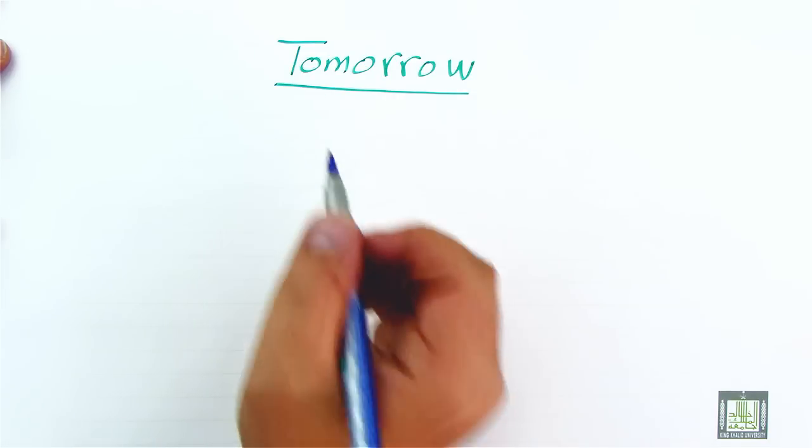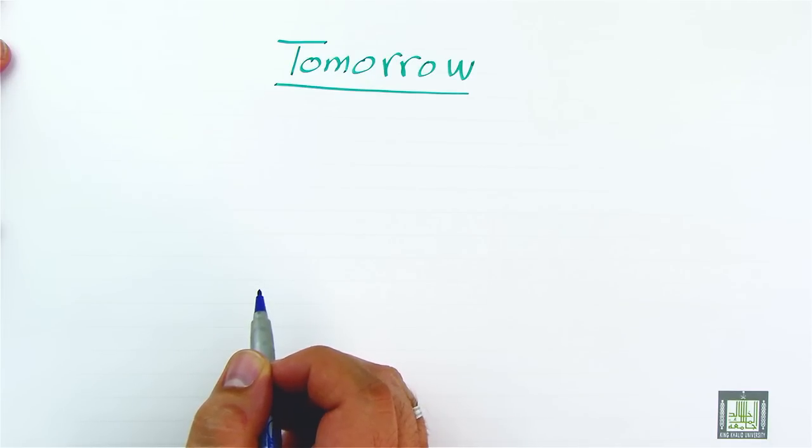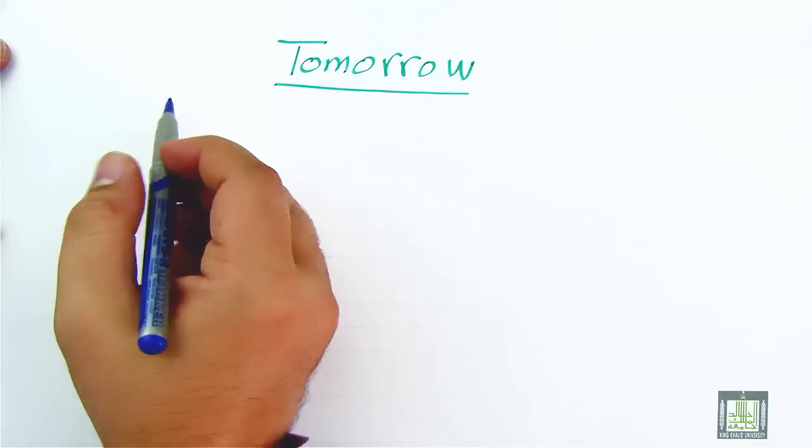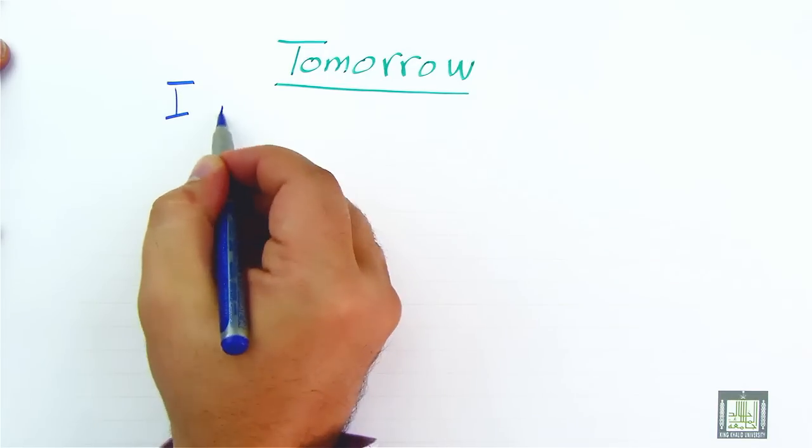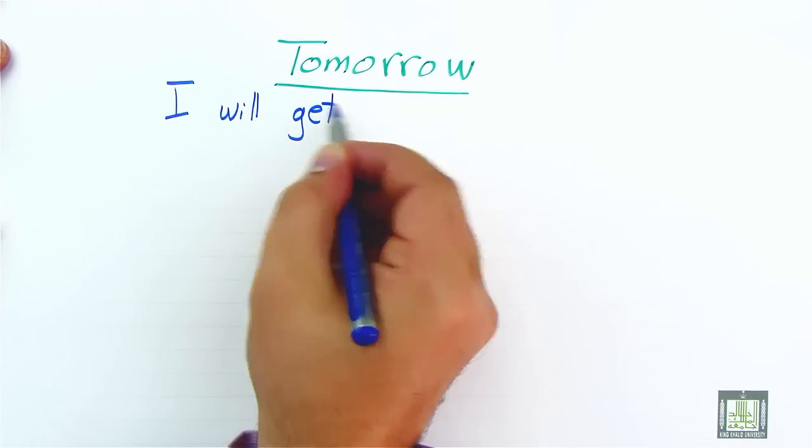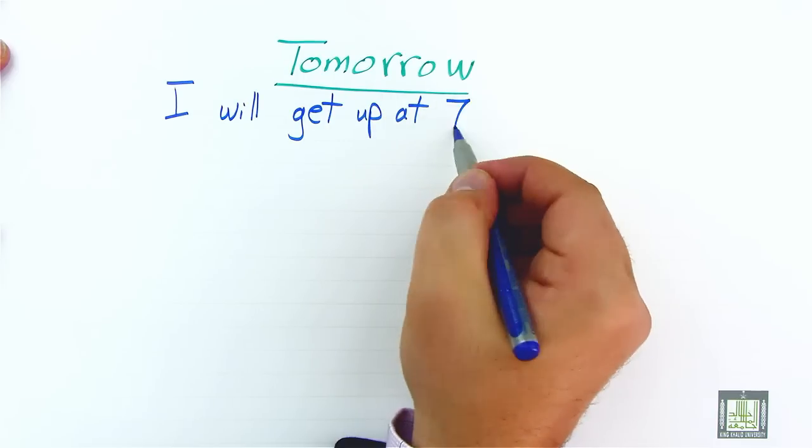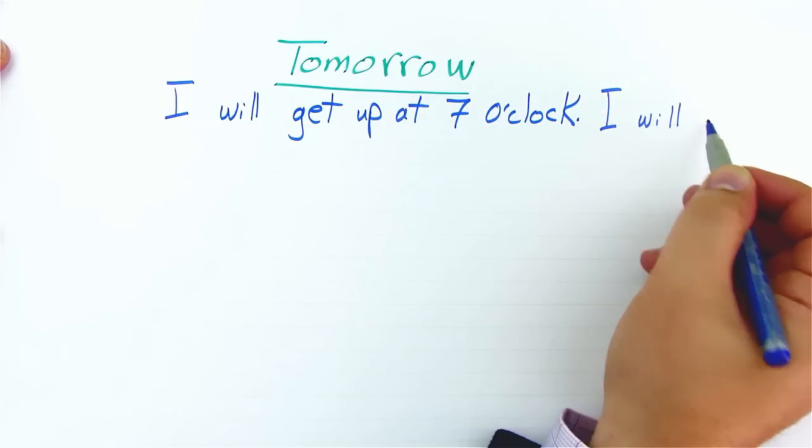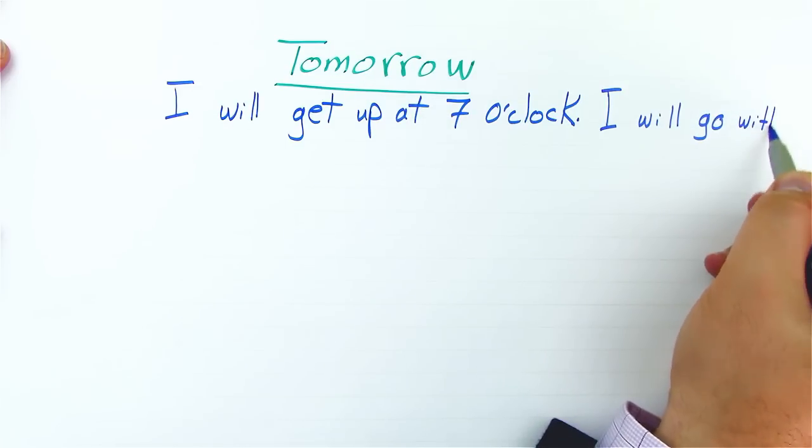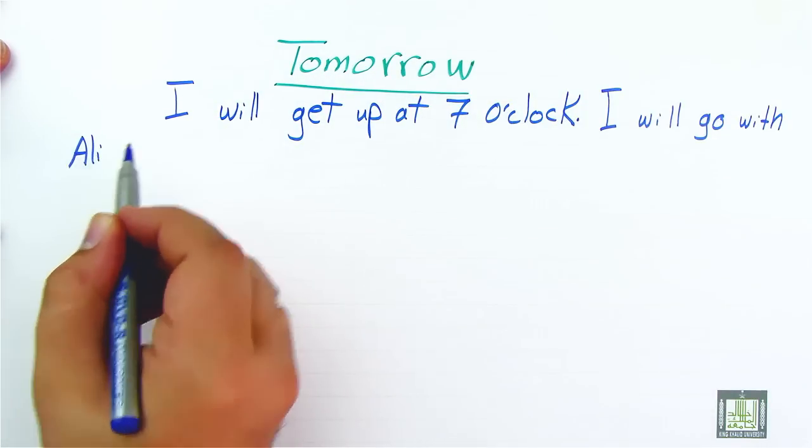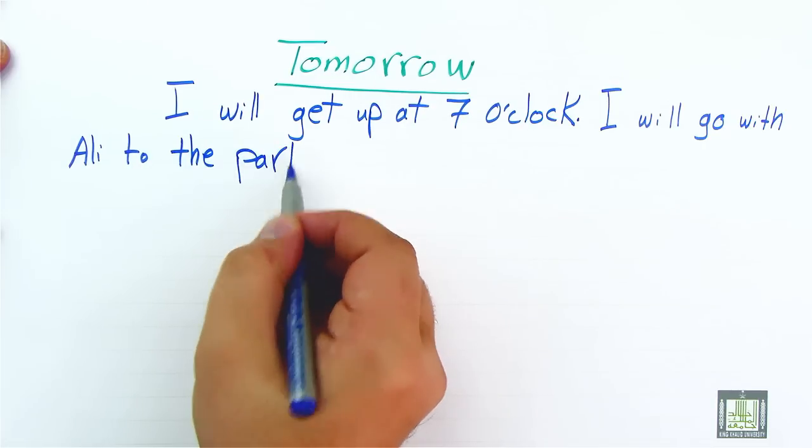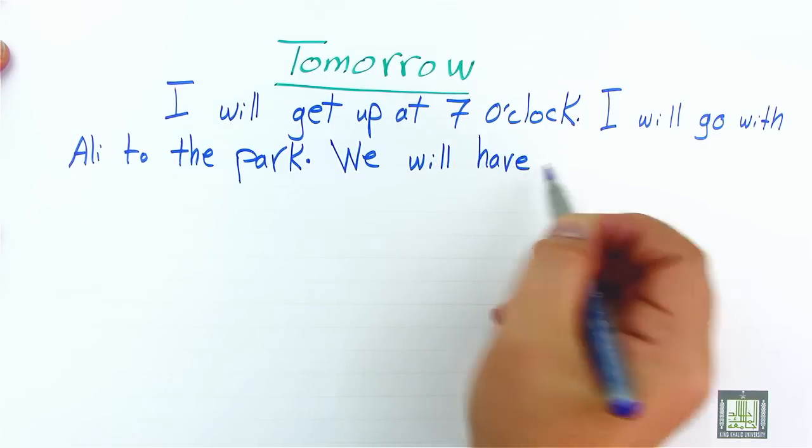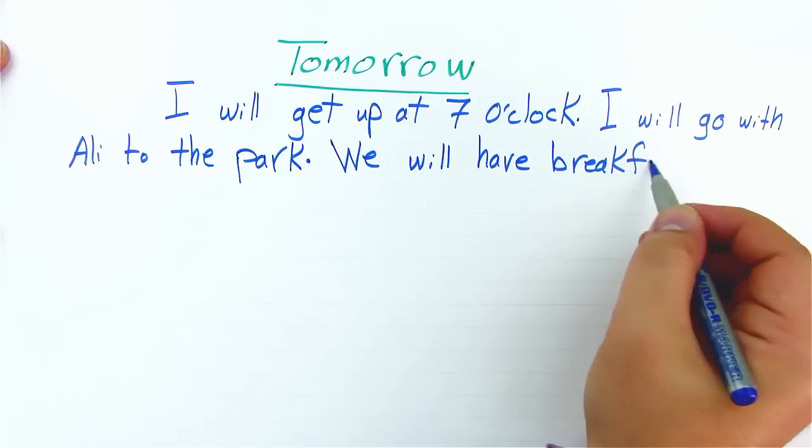And we will start using the same verbs and the same paragraph, but using future forms here. So we start, as we said, we leave some indentation space at the beginning and we say I will get up at seven o'clock. I will go with Ali to the park. We will have breakfast there.